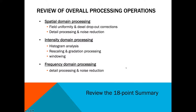To review the overall processing operations: spatial domain processing covers field uniformity, dead pixel dropout corrections, detail processing, and noise reduction. Intensity domain processing covers histogram analysis, rescaling, gradation processing, and windowing. Frequency domain processing covers detail processing — which is edge enhancement — and noise reduction. I would highly recommend reviewing the 18-point summary at the end of the chapter, as it does a fantastic job summarizing everything.